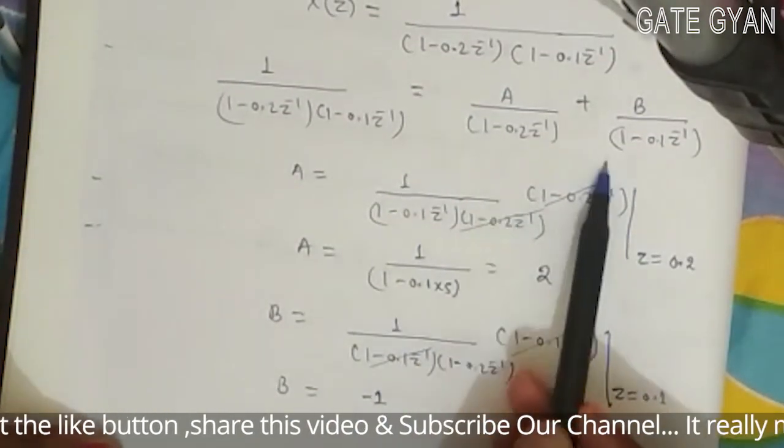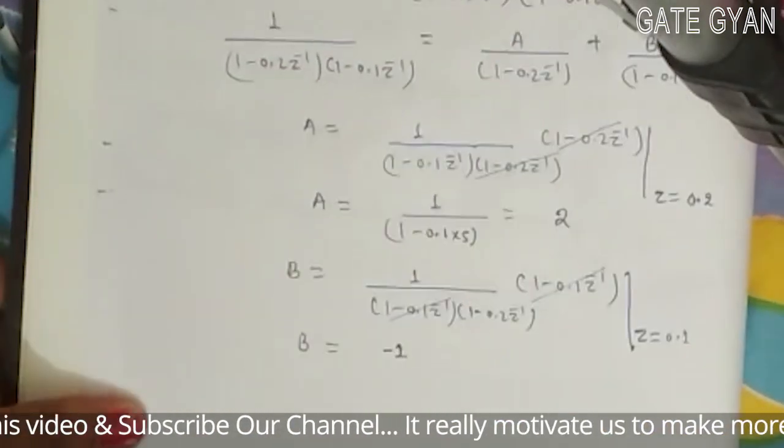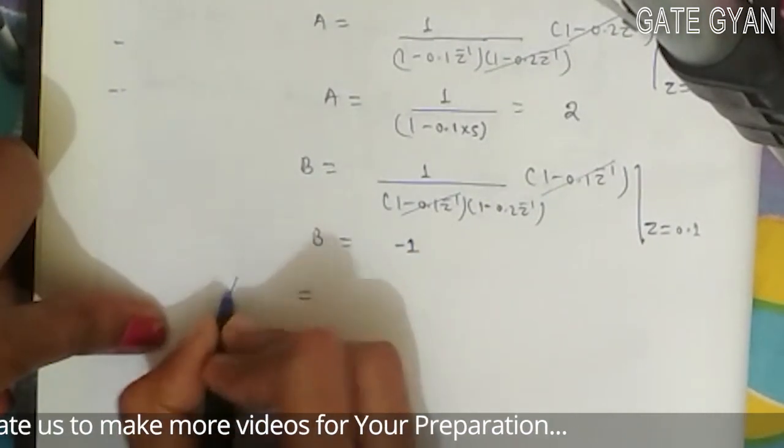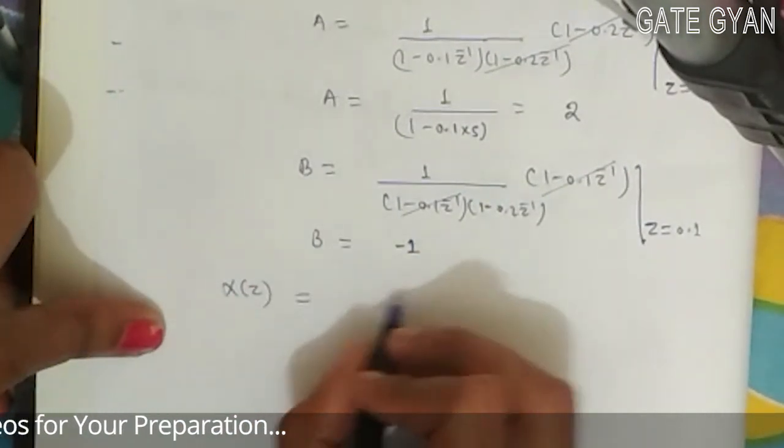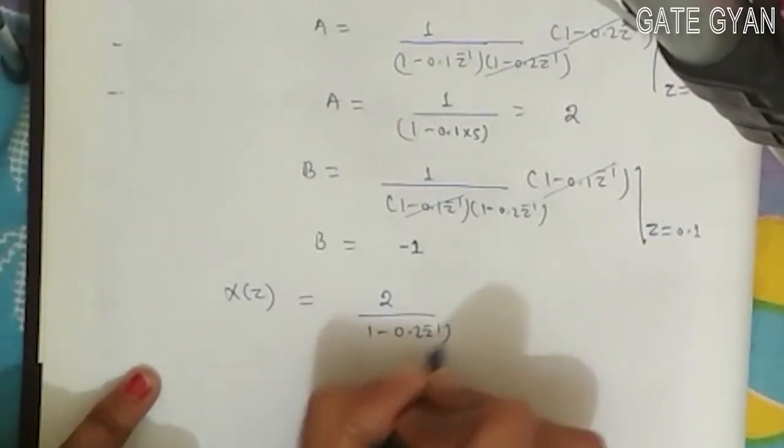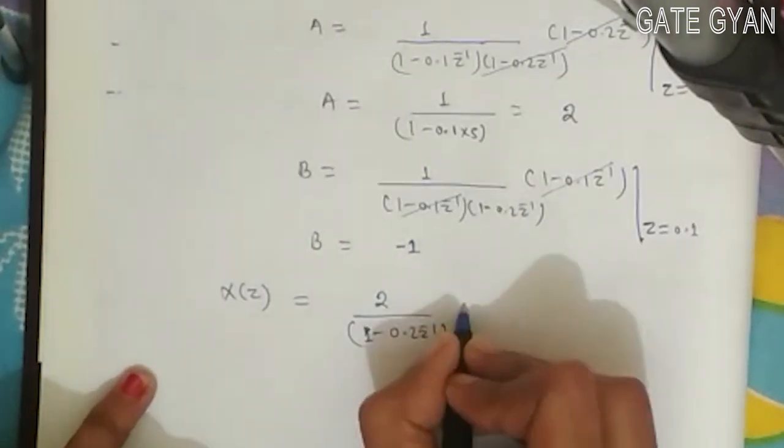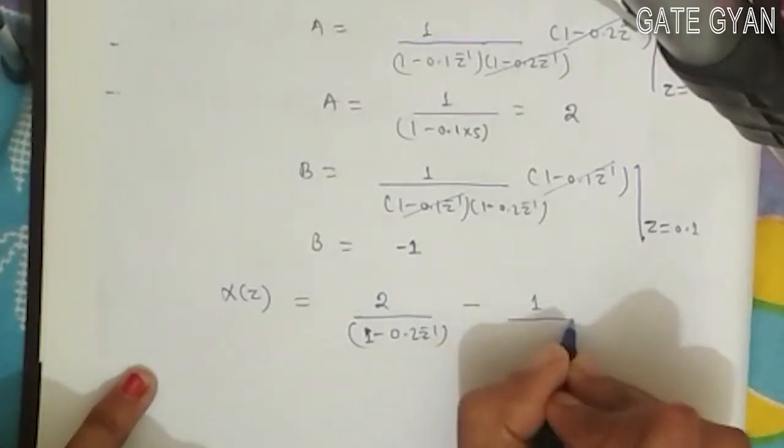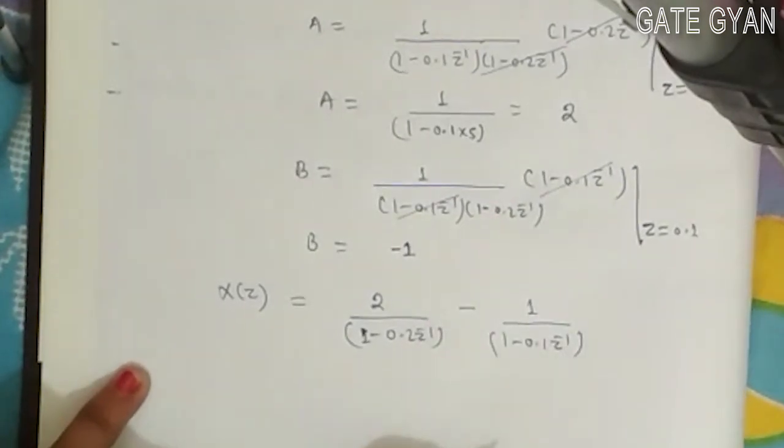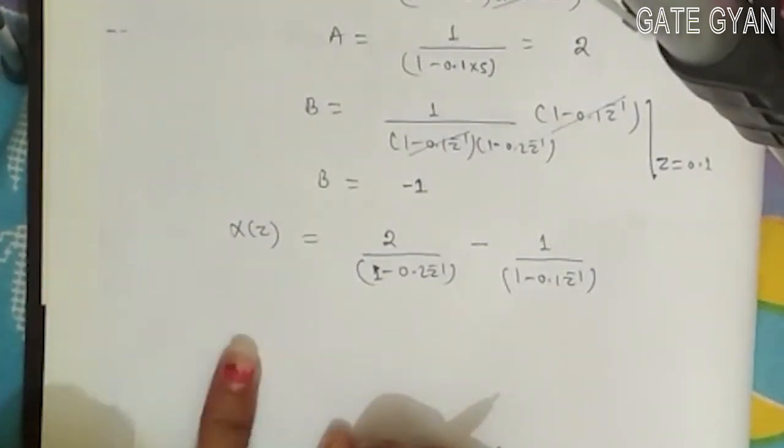Now I will replace my A and B here in this expression. So it will become my X(z) will become 2/(1 - 0.2z^-1) and B value is -1, so it will be minus 1/(1 - 0.1z^-1).